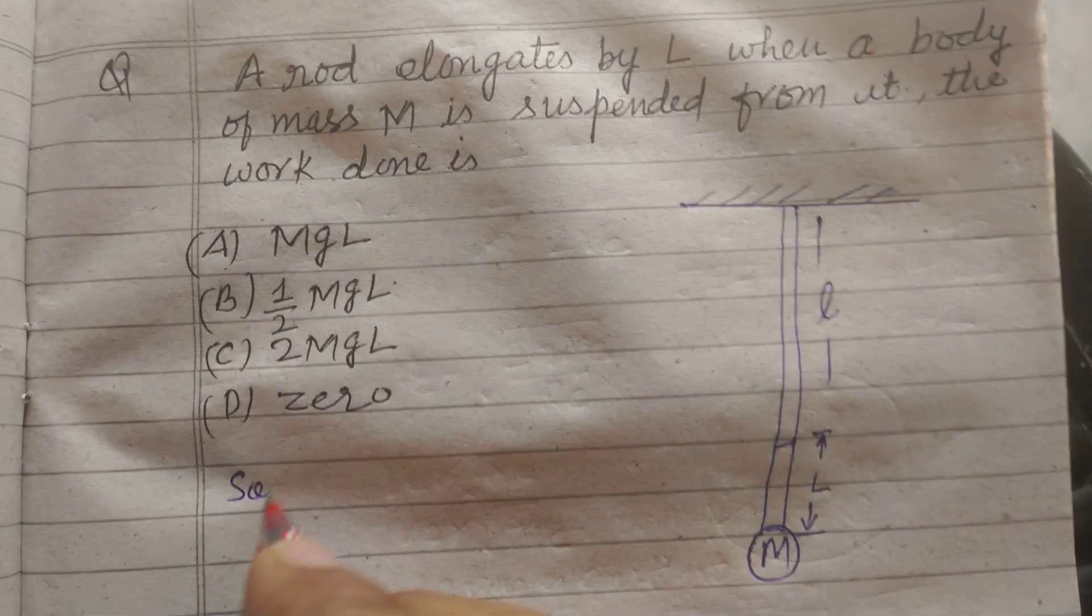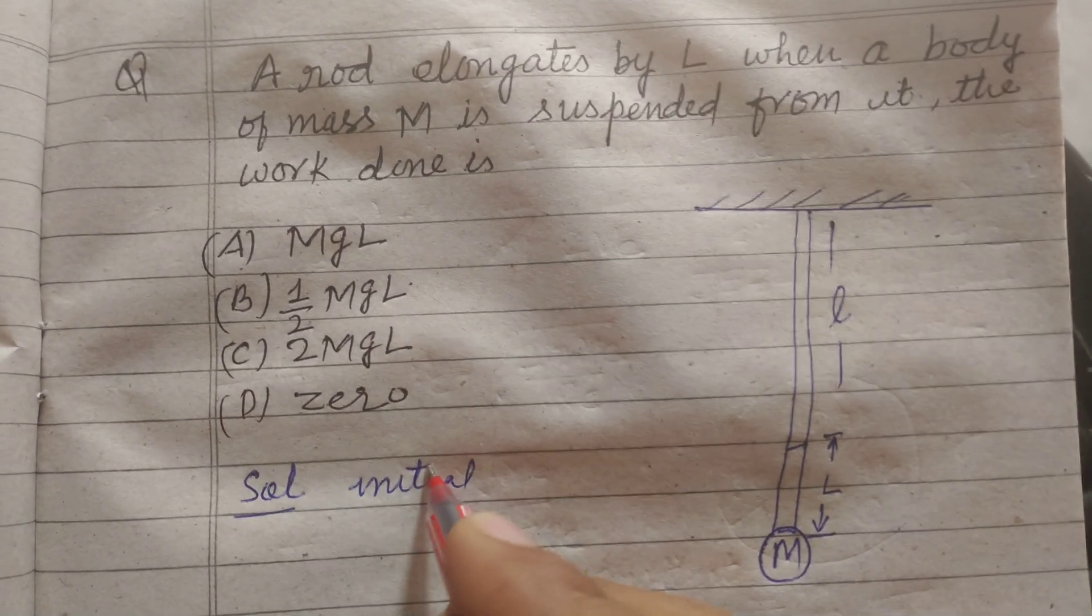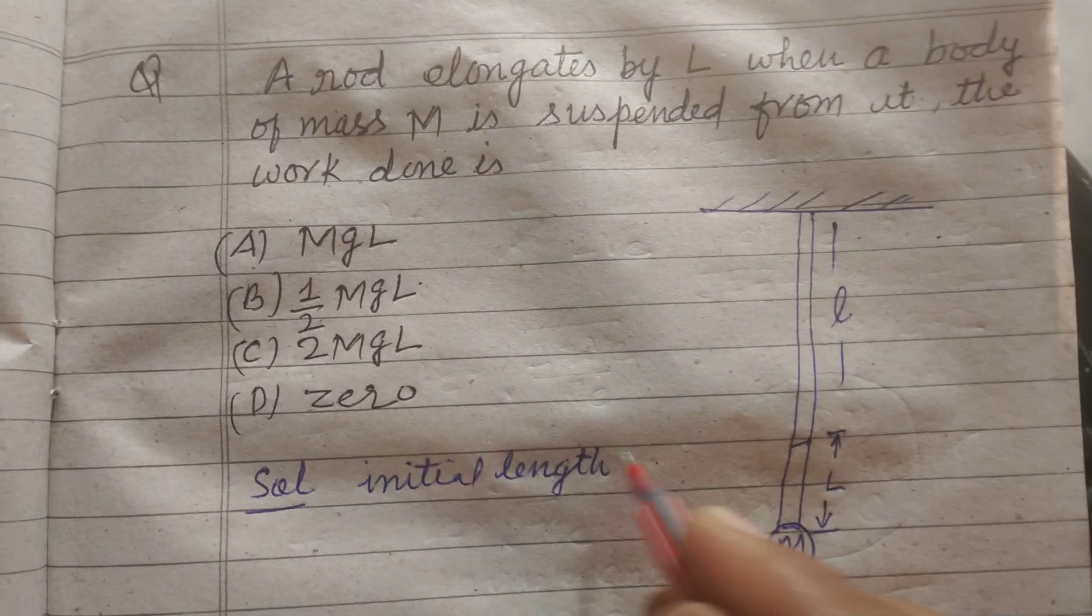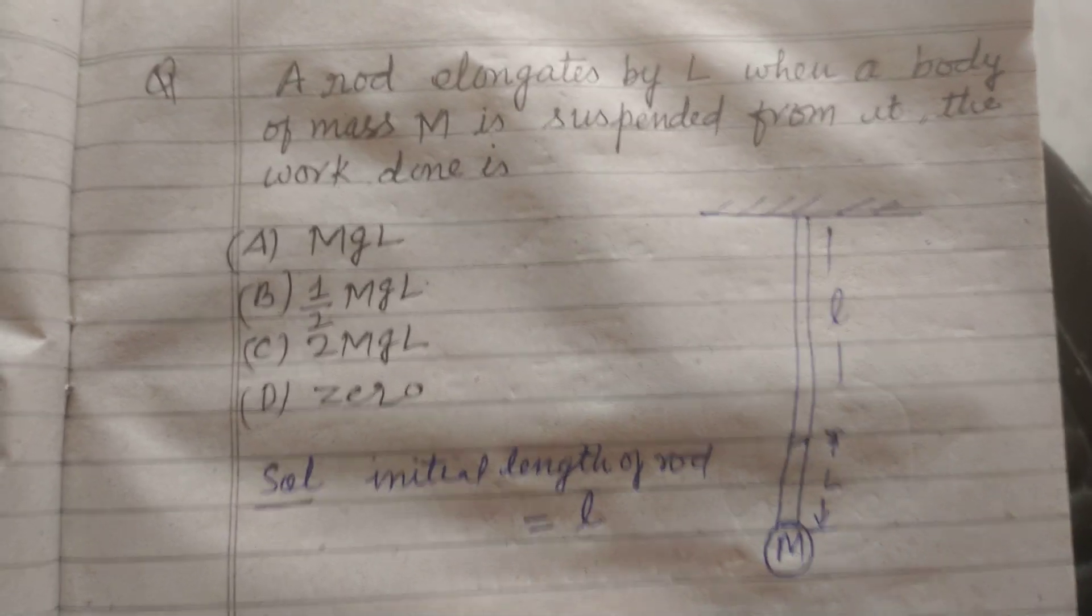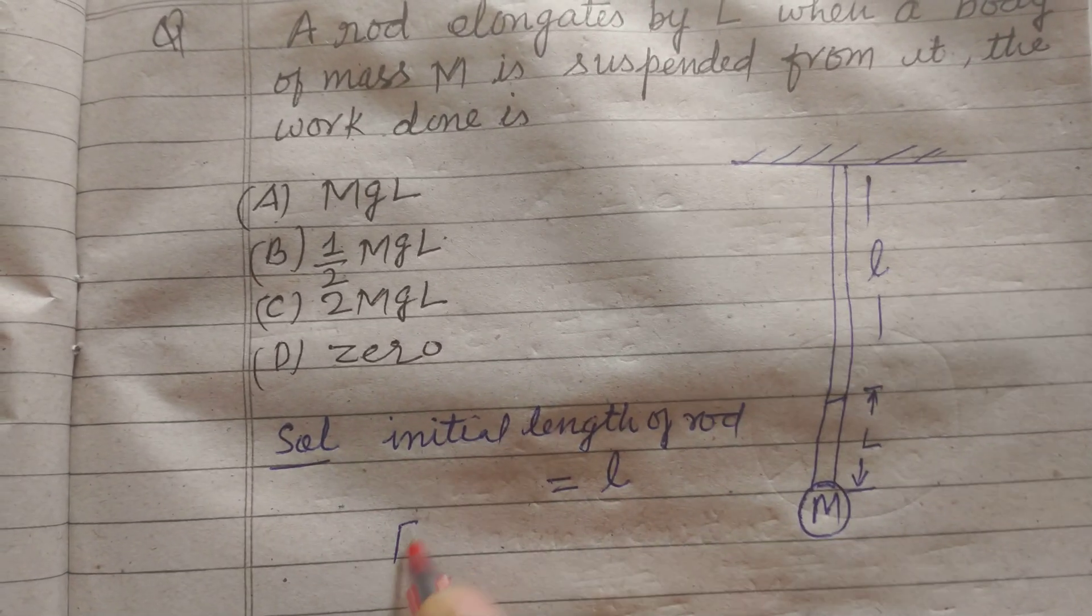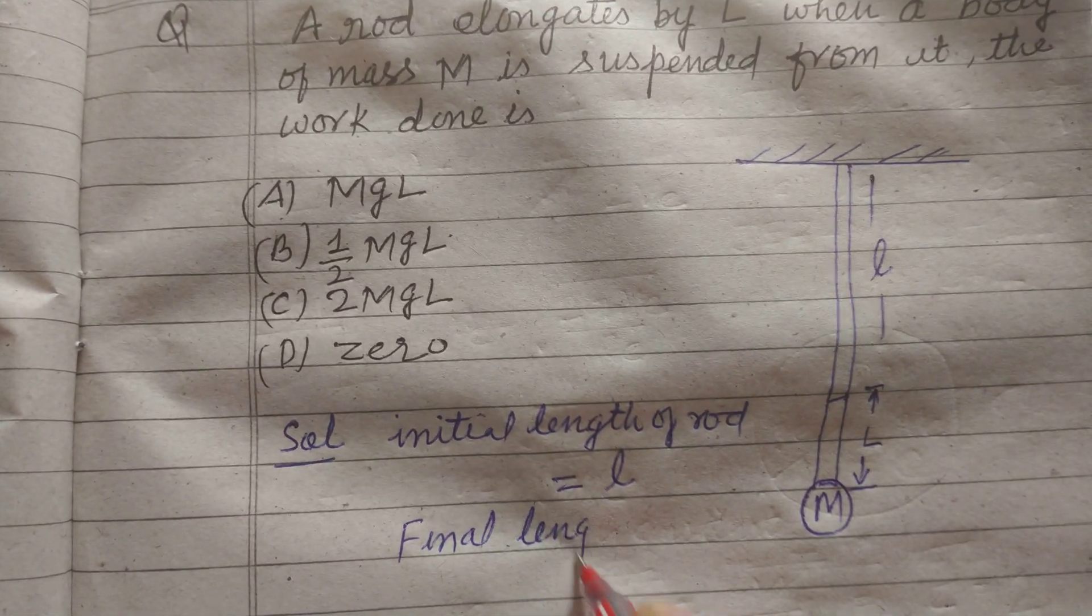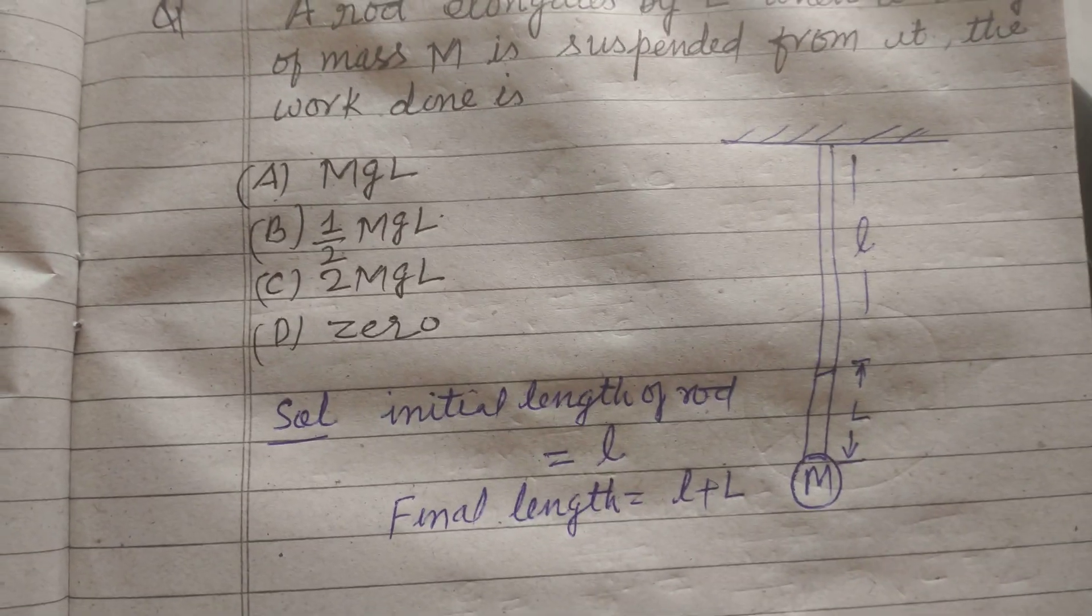Here, initial length of rod is small l. Final length equals l plus L.